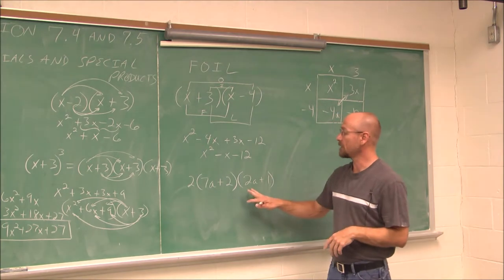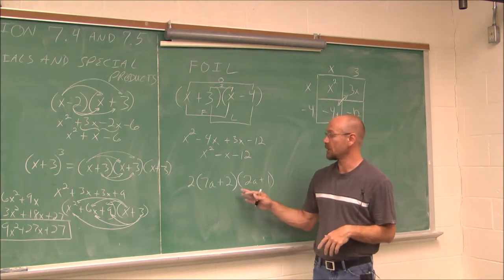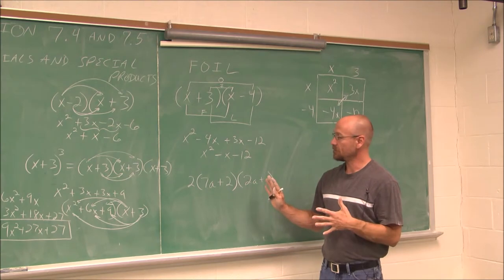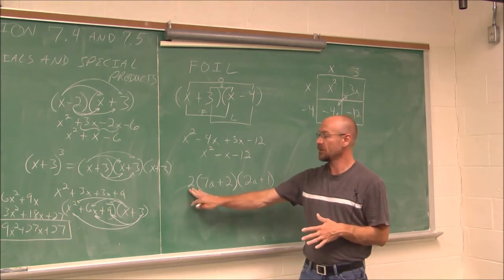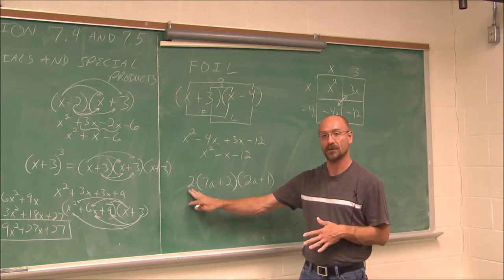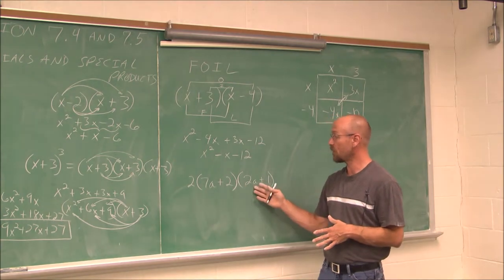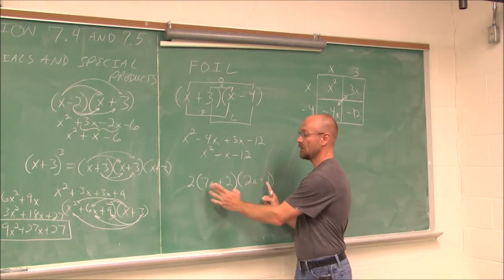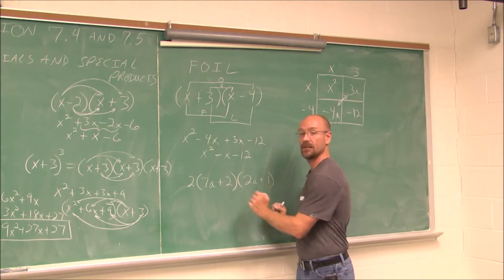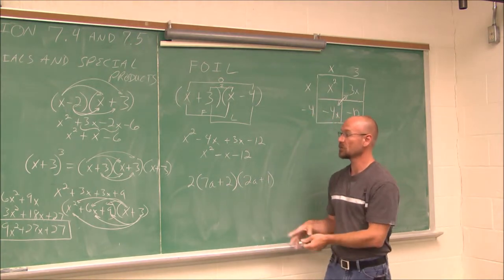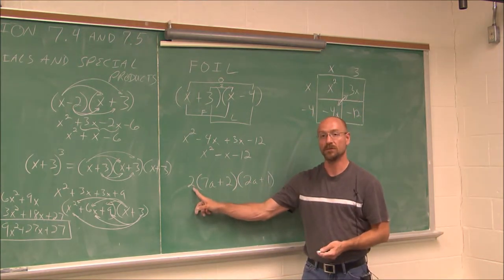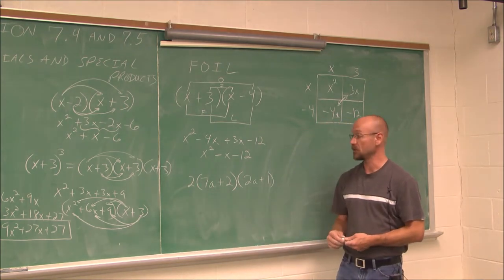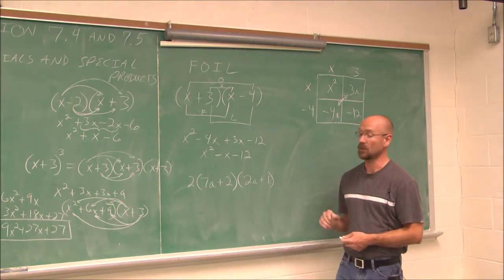I'd like you to try multiplying this out. Here's a heads up: save the multiplication by 2 for last. Use FOIL first — First, Outer, Inner, Last — combine your like terms, and then multiply everything by 2 using the distributive property. Try this one for yourself.